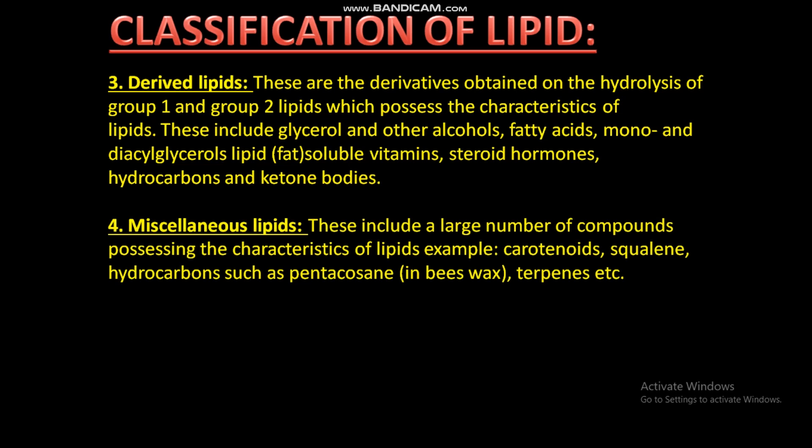4. Miscellaneous lipids: these include a large number of compounds possessing the characteristics of lipids, for example carotenoids, squalene, hydrocarbons such as pentacosane in beeswax, terpenes etc.